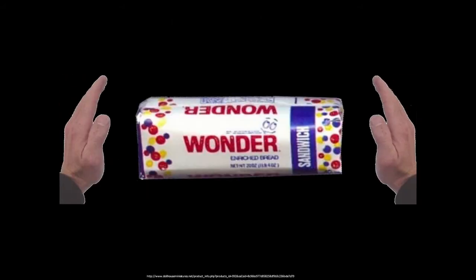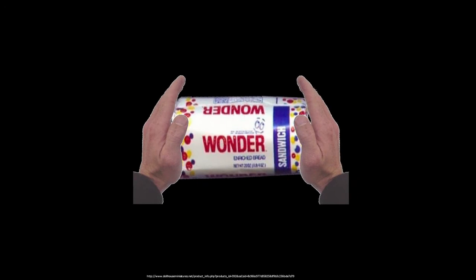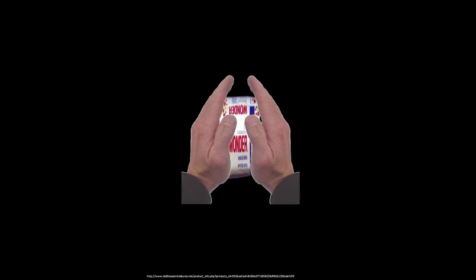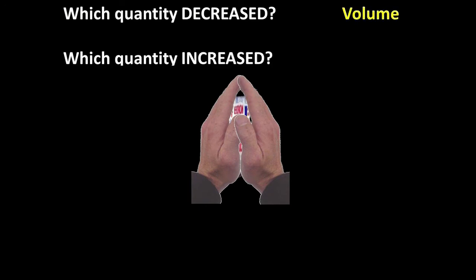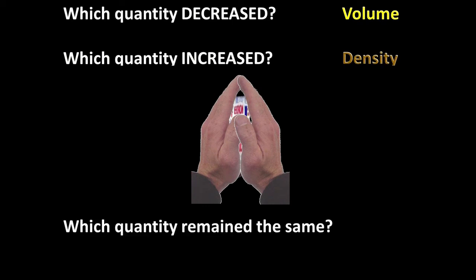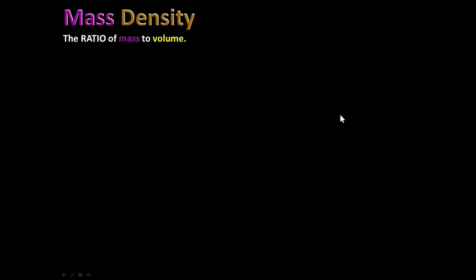If we had a loaf of Wonder Bread and squeezed it down with our hands, we can test our understanding of density: the quantity that decreased was its volume, the quantity that increased was its density, and the quantity that remained the same was its mass. Density seems pretty easy, but there are different kinds of density.